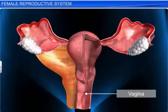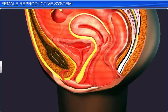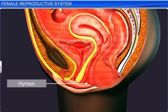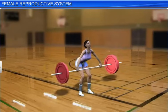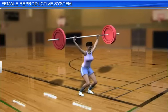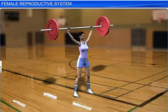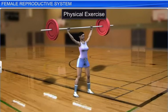The vagina is a muscular tube starting from the lower end of the uterus up to the outside. The opening of the vagina in young females is partially covered by a thin membrane called the hymen. The hymen is frequently ruptured in childhood due to strenuous physical exercise.